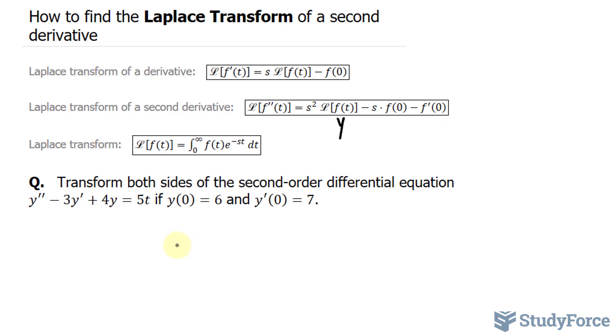So I'm going to replace this with s² times the Laplace transform of y minus s times f(0), which in our case is 6, minus f'(0), which is 7. This part is taken care of. Now I'll move on to -3y'.